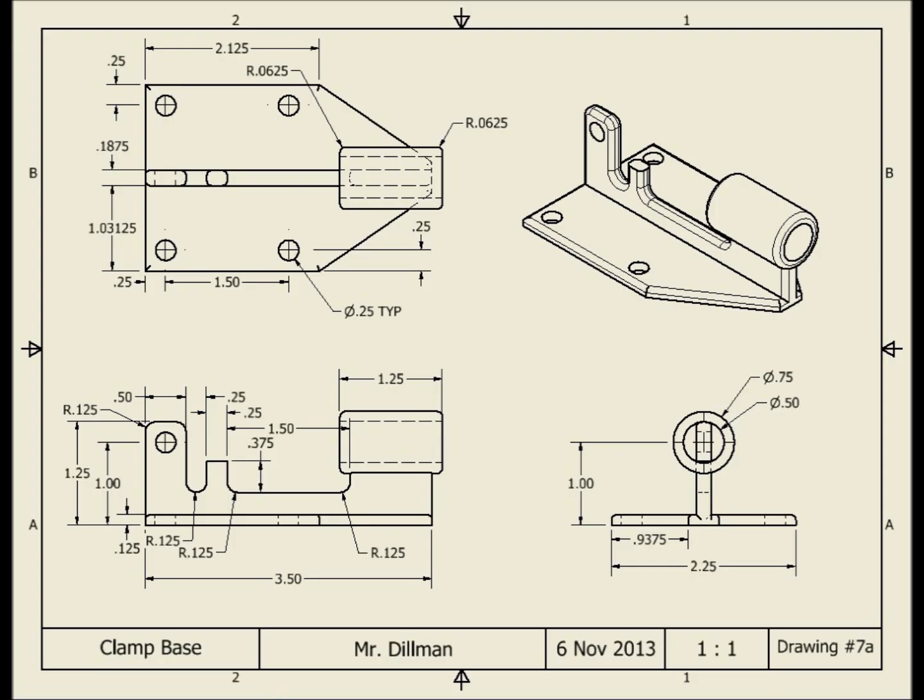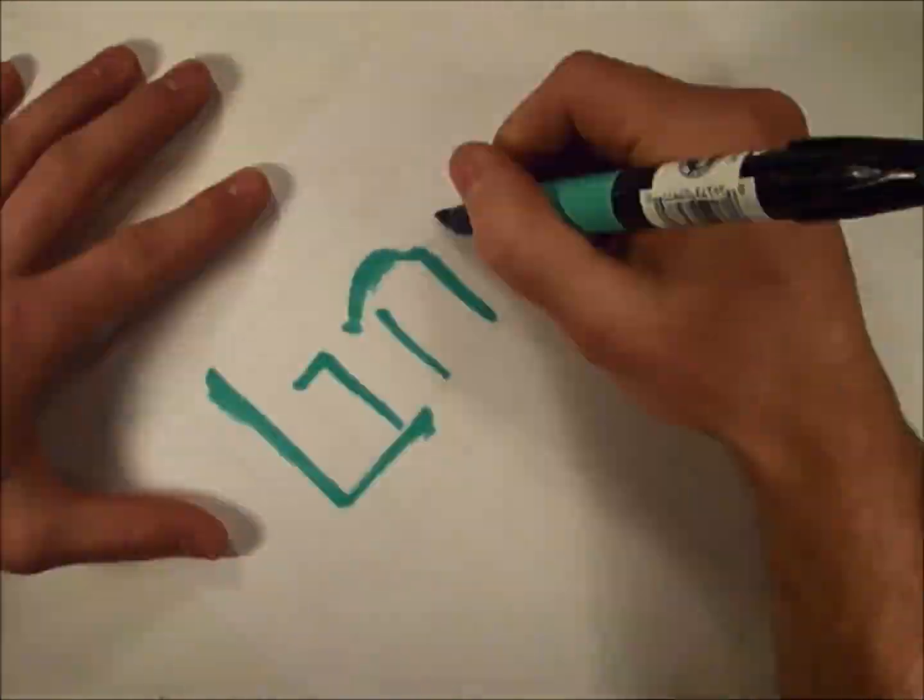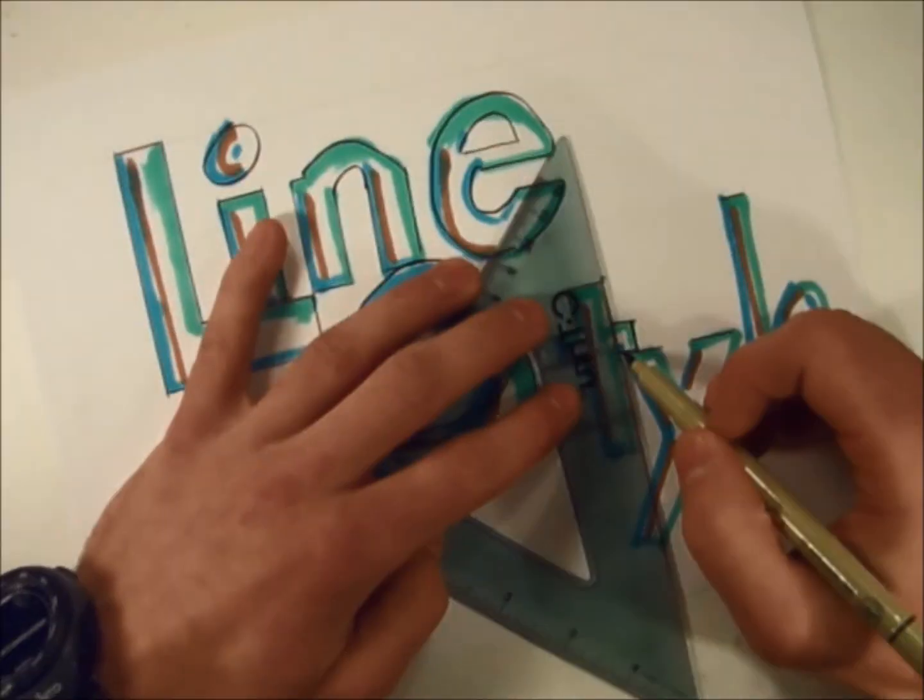When we look at a drawing like this, all the different line types can be confusing. How do we know what each one means? Well, here's your crash course in understanding different line types and technical drawings.